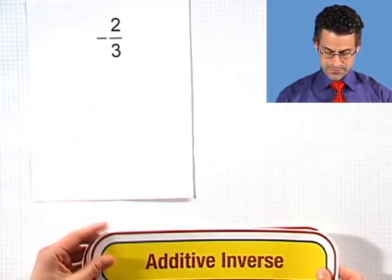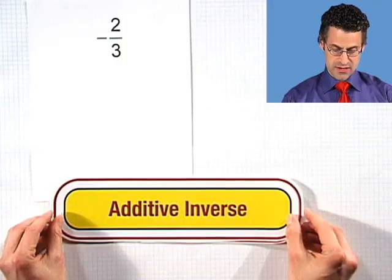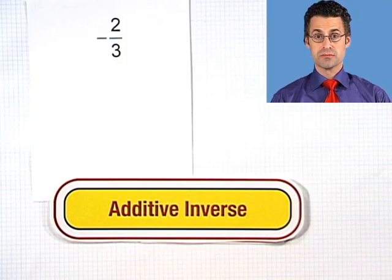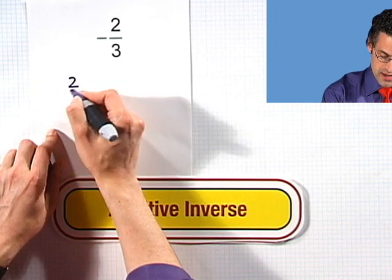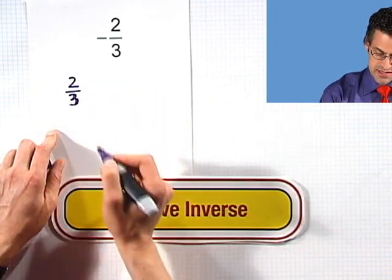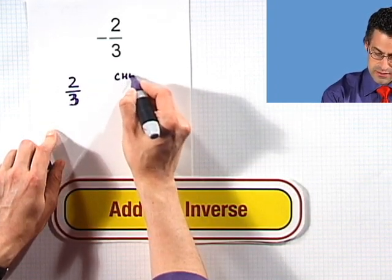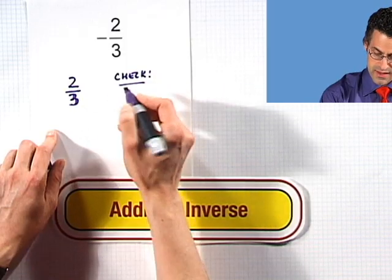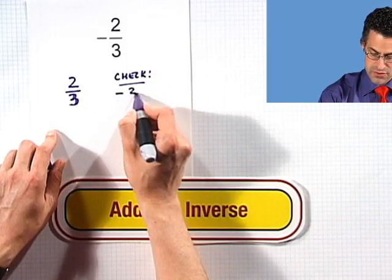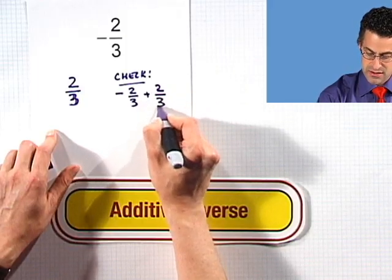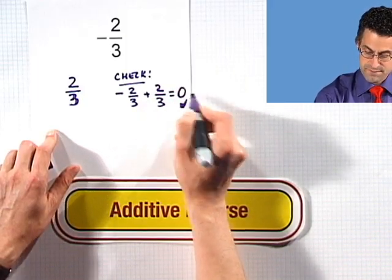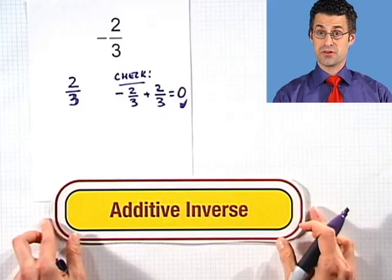What's the additive inverse of negative 2 thirds? Well, it's the opposite, so that would be 2 thirds. You can check this: if I take negative 2 thirds and add it to 2 thirds, I get zero. That's what it means to be an additive inverse.